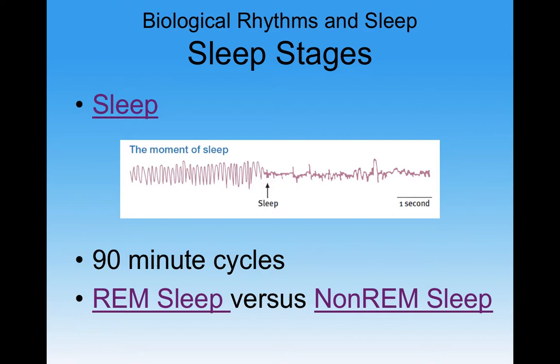One big thing you'll definitely want to know for quiz, homework, and test questions is that the typical sleep cycle is 90 minutes — that's a big thing to remember. We operate on 90-minute sleep cycles. Those cycles change a little in how they're made up throughout the night, but they stay about 90 minutes in duration.